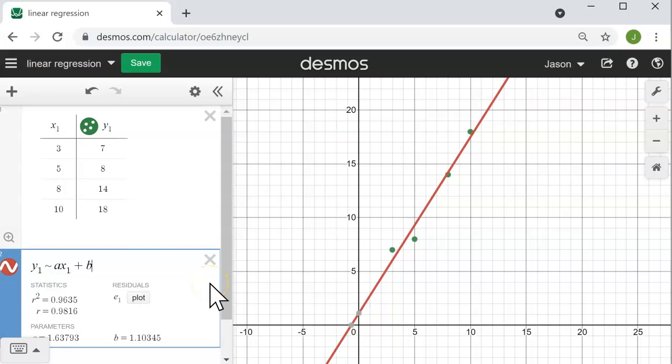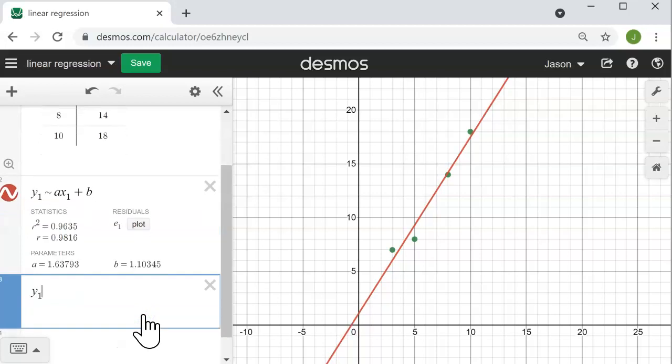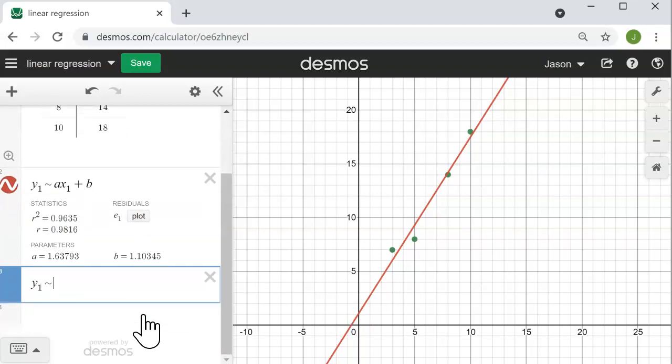To close the video, let me point out that other forms are available. We can do quadratic regression in a similar way, just by typing in instead of a linear form, a quadratic form: y1 and then the tilde.